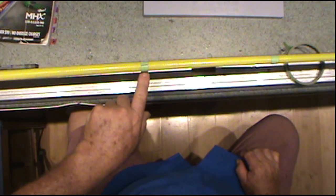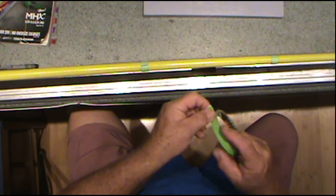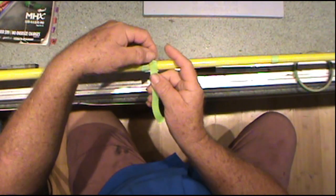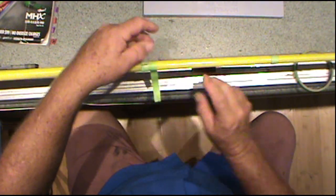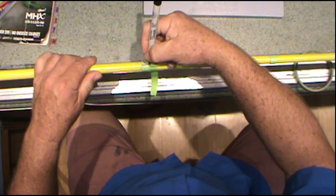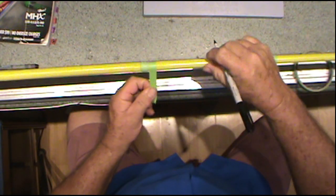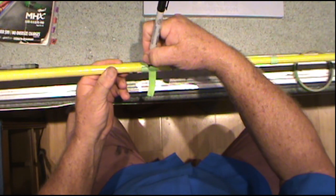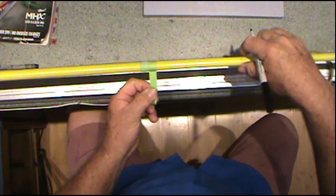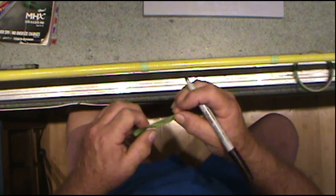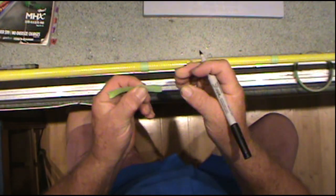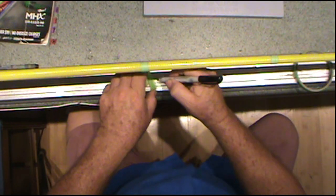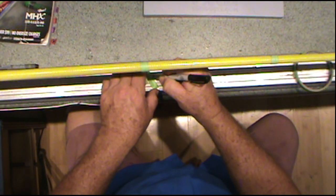Now we have to have a 180 degree mark from this, so the easiest way to get that is to take a piece of masking tape, put it on the blank, put a mark where the mark is, rotate it around 180 degrees, put a mark at the 180 degree, pull it back, sticky side out, line up your two marks, make a crease where the crease is, put a mark.